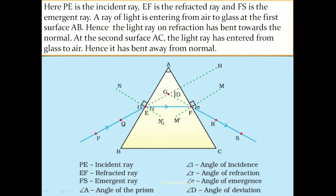This picture shows the refraction of white light by a glass prism. Here PQ is the incident ray and NN' is the normal at the point of incidence. The angle between the normal and the incident ray is the angle of incidence. Since light is entering glass from air — an optically denser medium from an optically rarer medium — it bends towards the normal. Hence EF is the refracted ray and angle R is the angle of refraction.